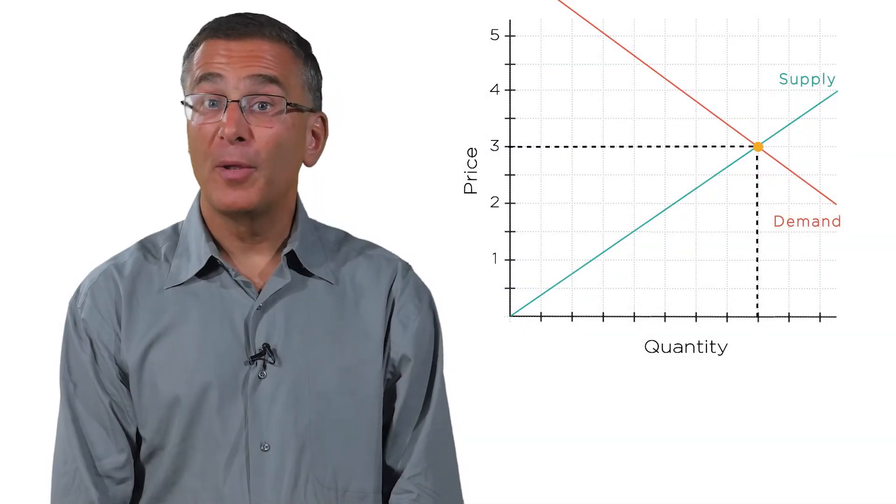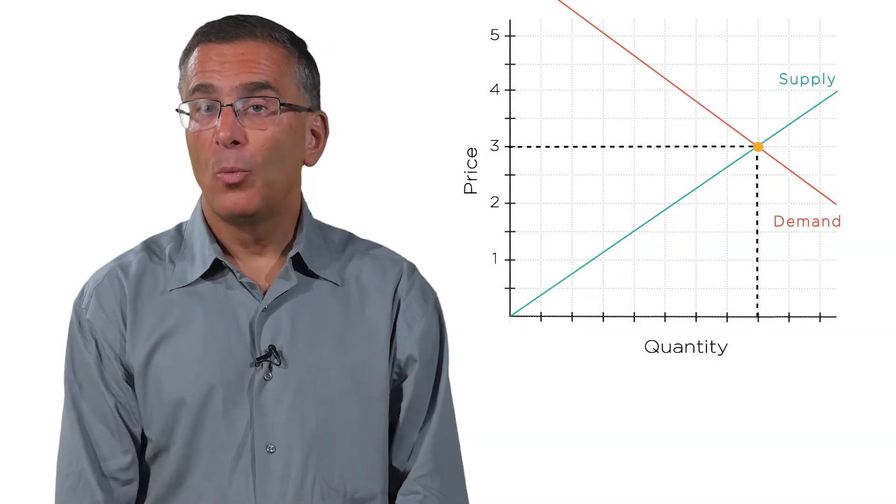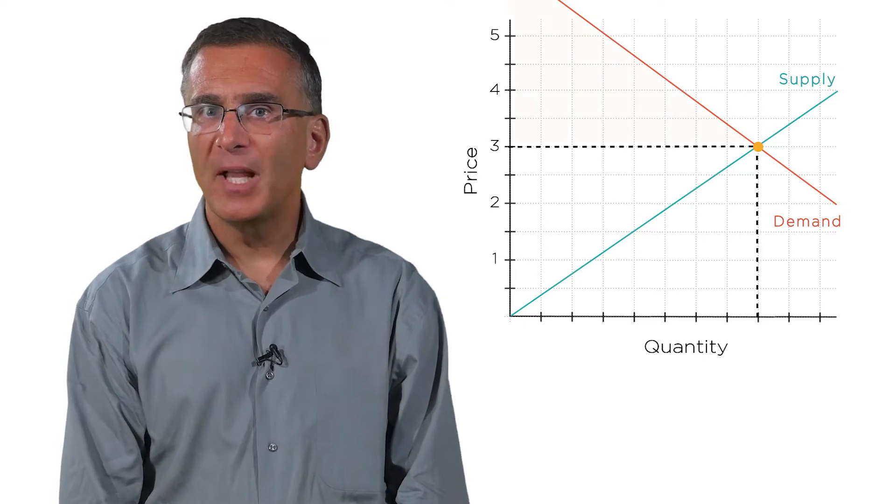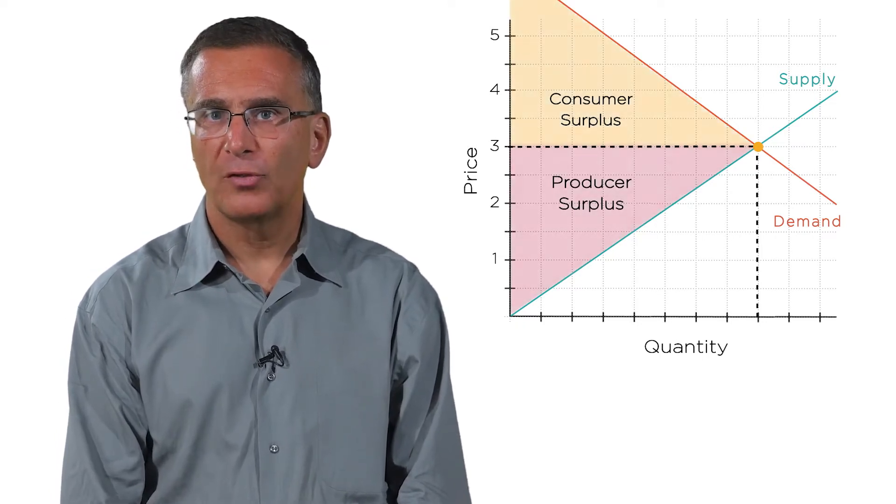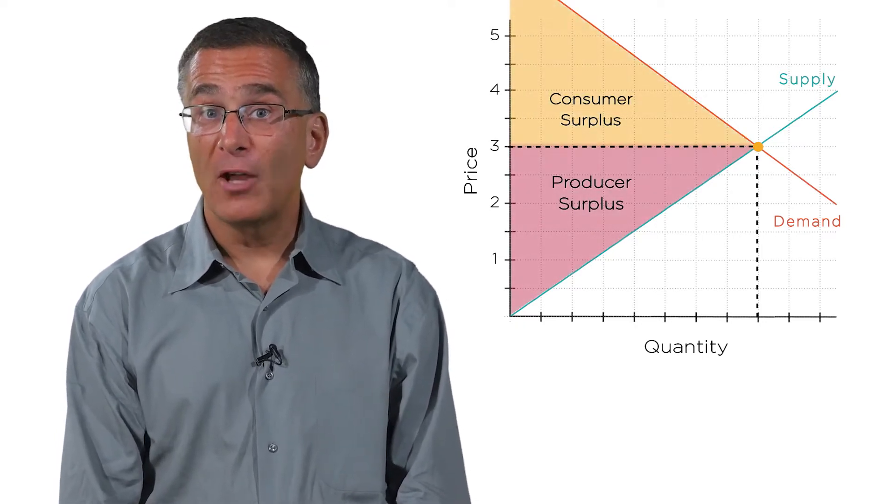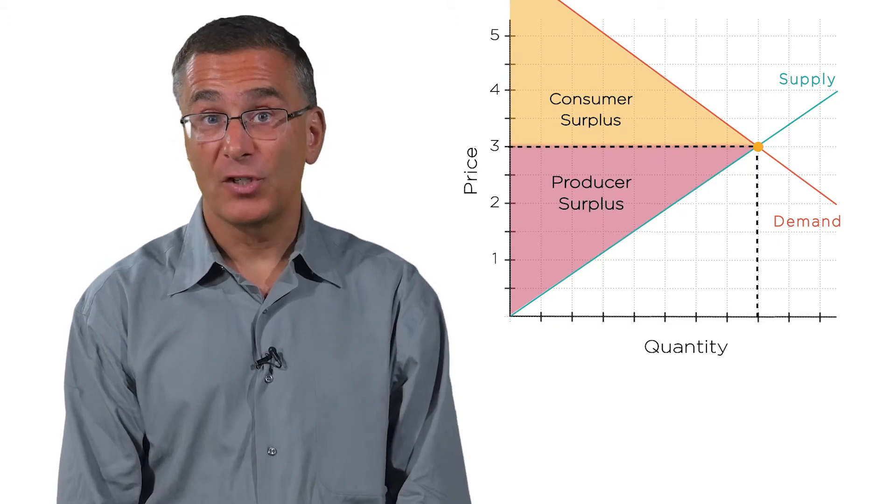We just talked about how a competitive market maximizes efficiency. With perfect competition, you maximize the sum of consumer and producer surplus. We also talked about how trying to intervene in the market led to inefficiency.